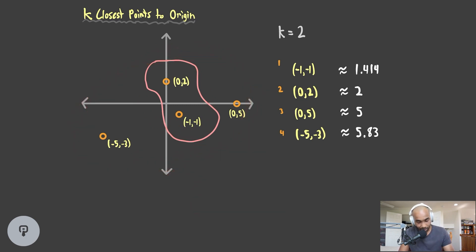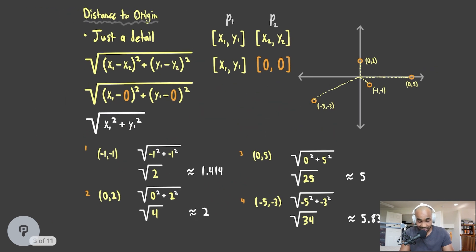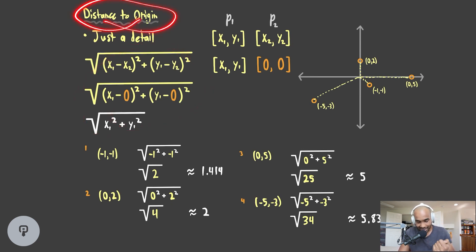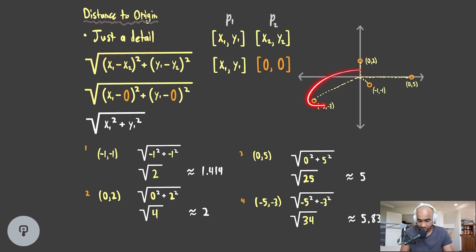So how are we going to approach this question? First, we want to skim over the detail of how distance is calculated — it's not the point of the problem. You're going to see many problems that are really similar to core problems we've already looked at, but with decorators on top of them. This distance to the origin is actually just a decorator on top of a problem we've already seen. You'd probably just be given this equation.